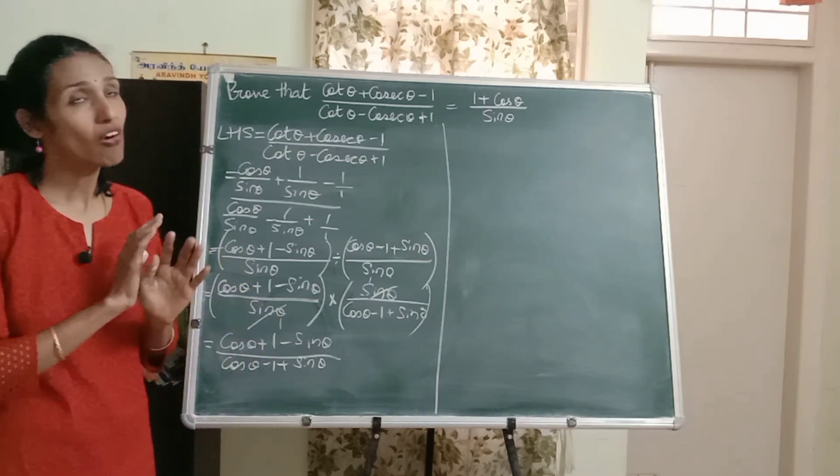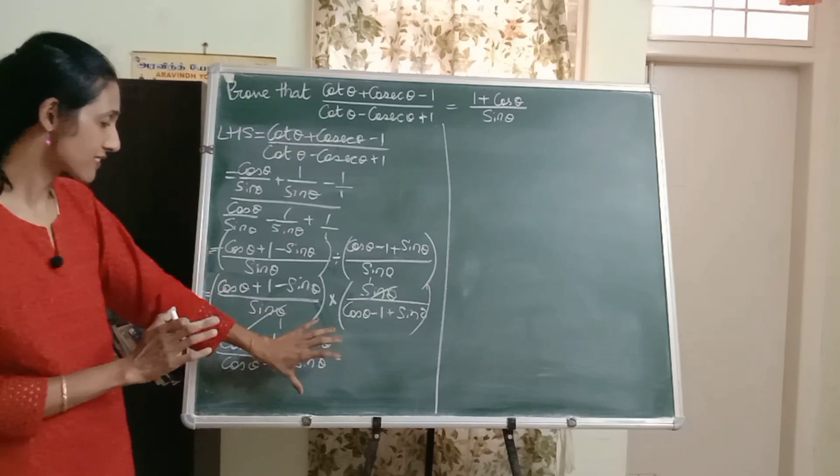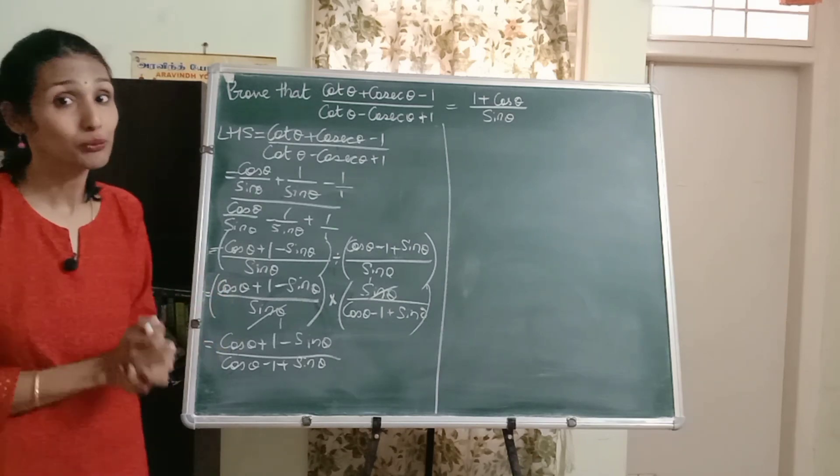Now, how do we do that? One way is I can multiply numerator and denominator by the same term, say maybe by sine theta or cos theta, then I can get sine square or cos square. So that way I can apply the identity.